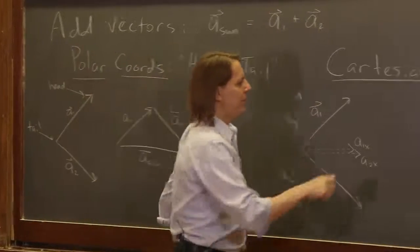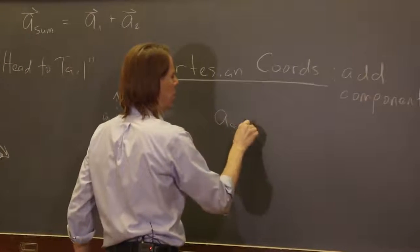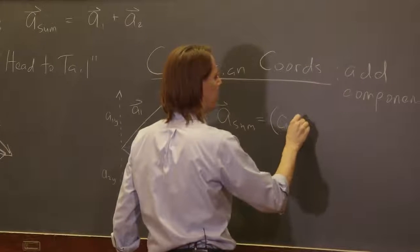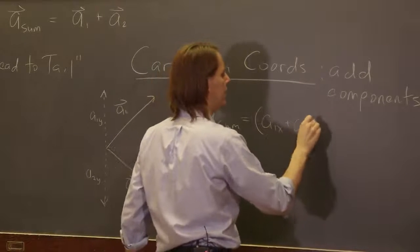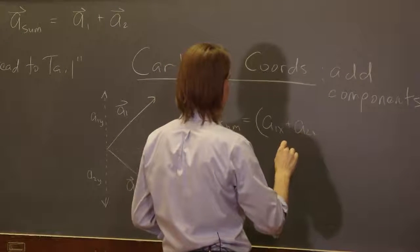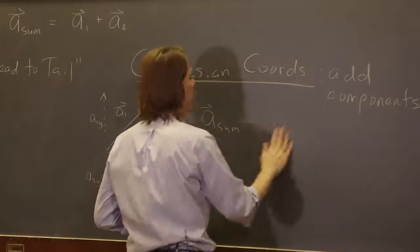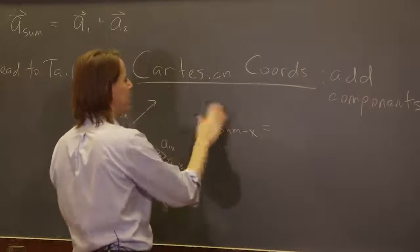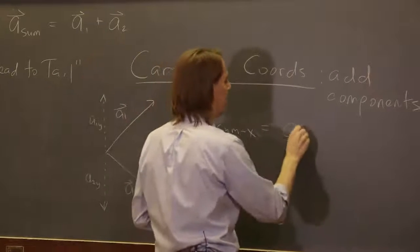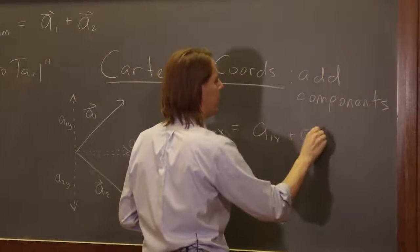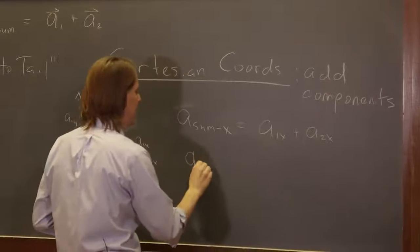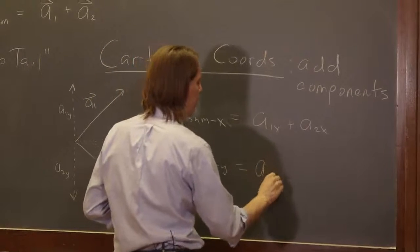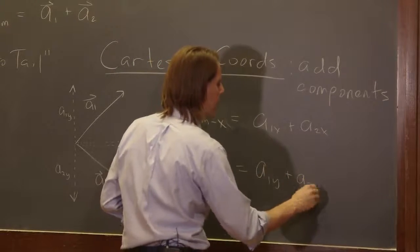So then a sum, in this case, we could get it mathematically. If we wanted it in Cartesian coordinates, a sum the x component would be simply a1x plus a2x, and a sum the y component would be a1y plus a2y.